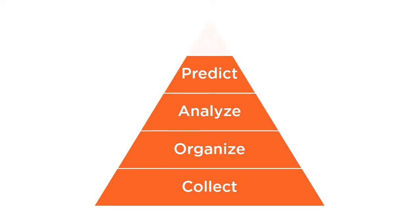Finally, we have a need to automate. This is where we close the data science loop and remove the human from the process. This involves advanced technologies like artificial intelligence, deep learning, and reinforcement learning.